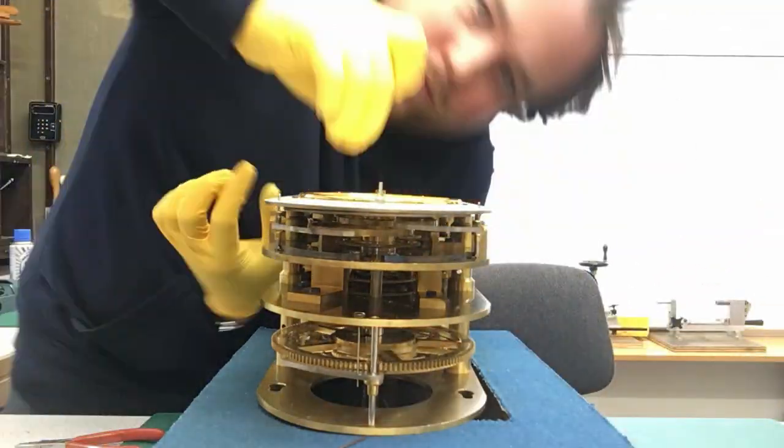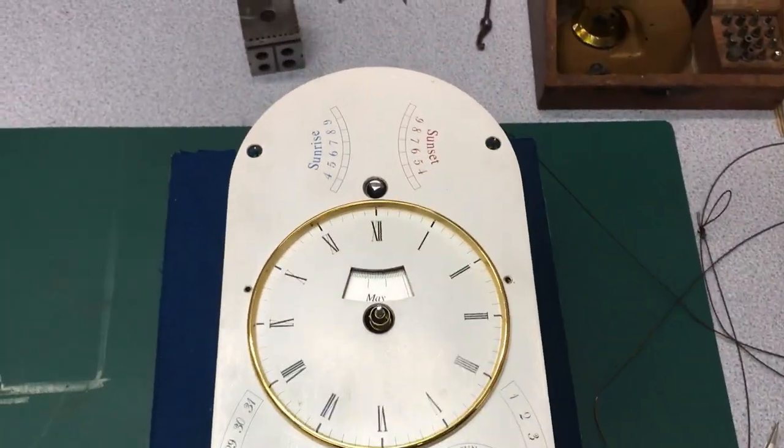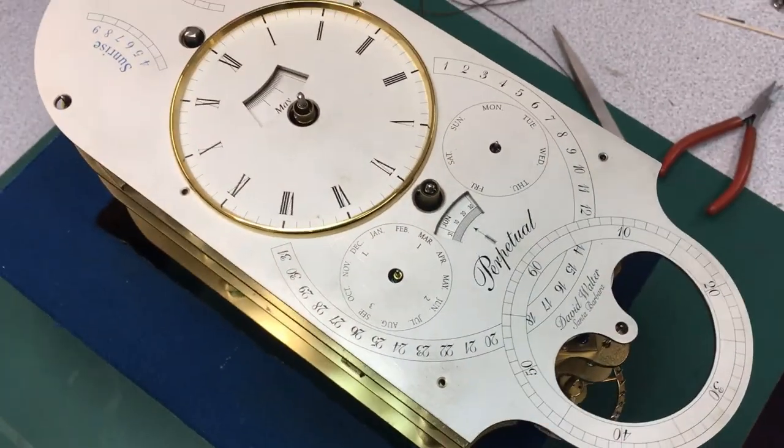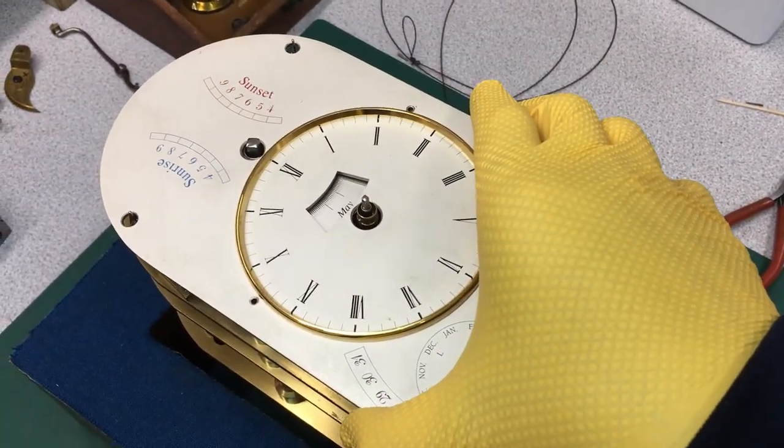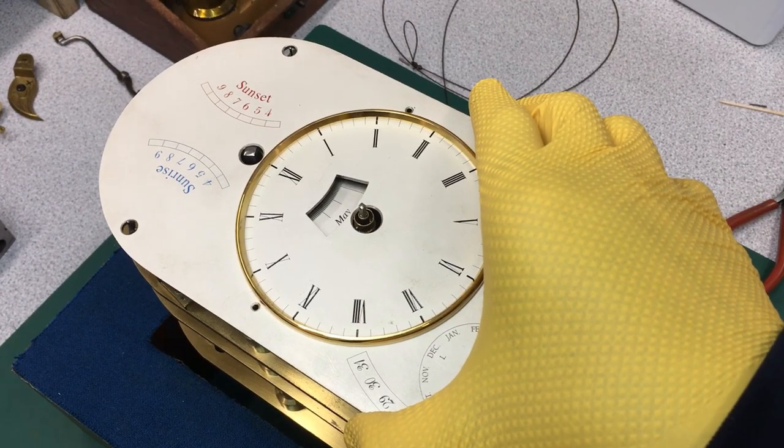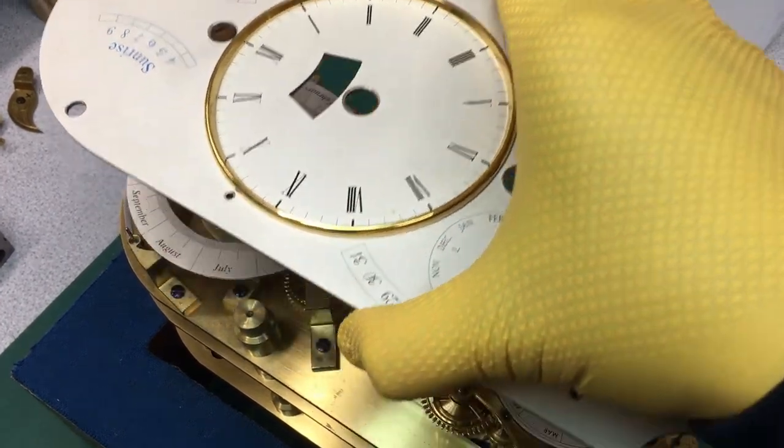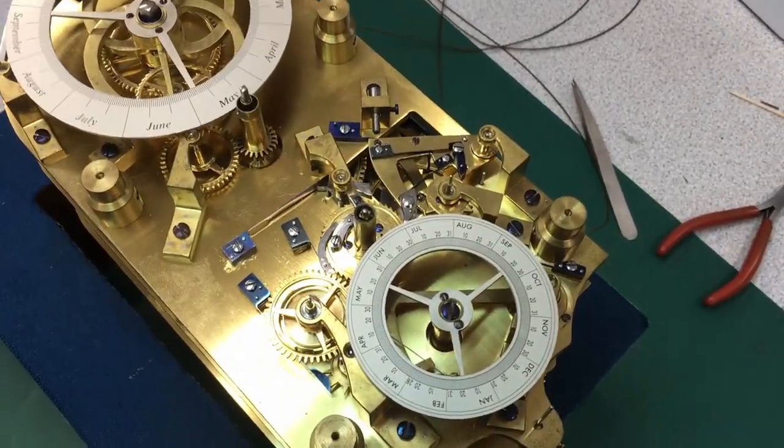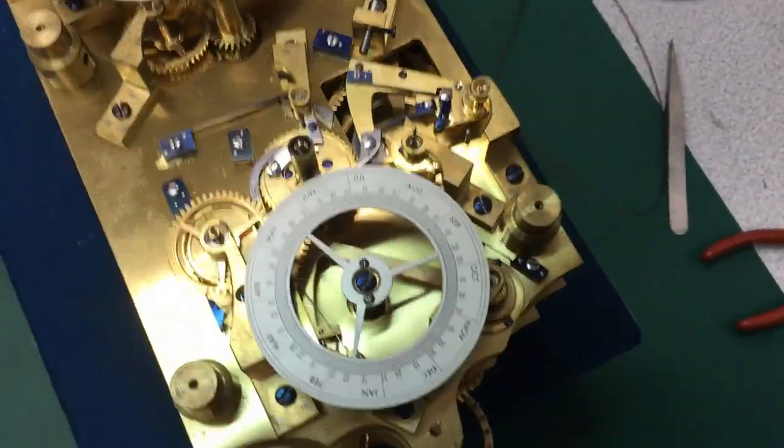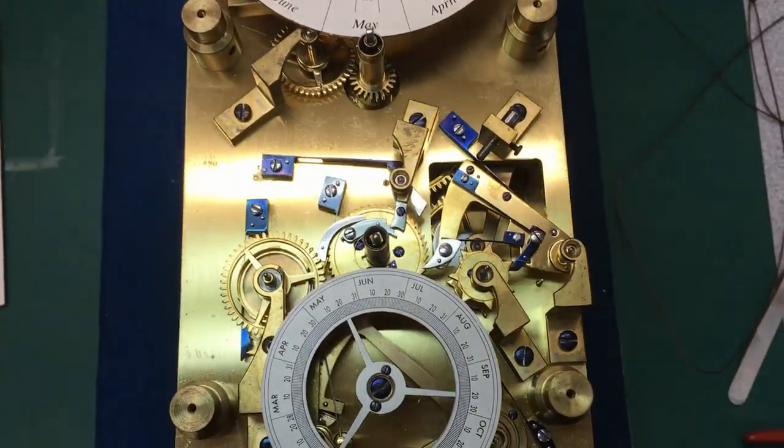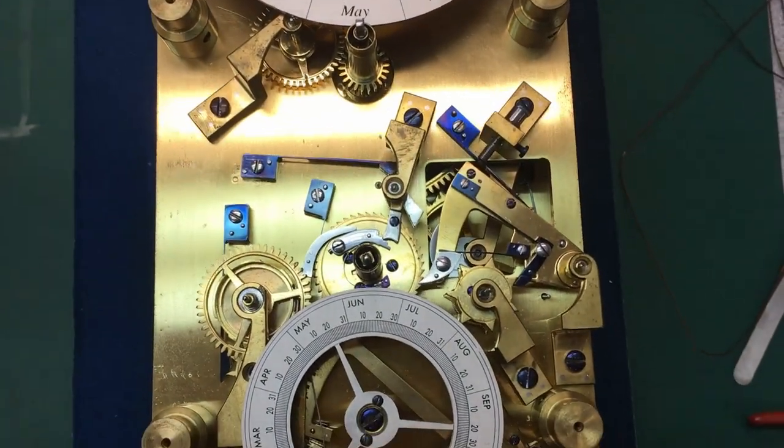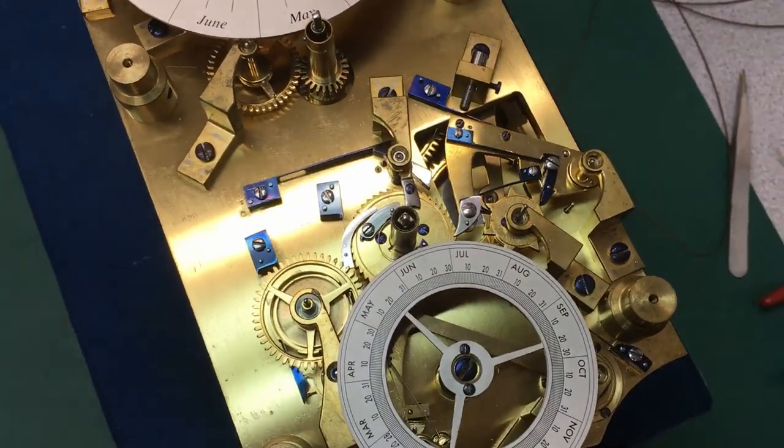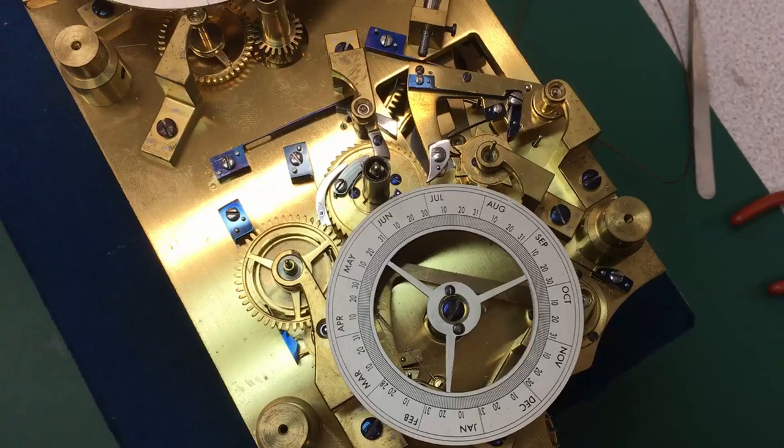Okay, so we've got the hands removed and I've also removed the four screws that hold the dial in place. So now we can carefully lift the dial away from the movement to reveal David Walter's take on the George Daniels perpetual calendar system. That's the mechanism that we're going to be looking at in a little bit more detail as it's giving us a few faults.